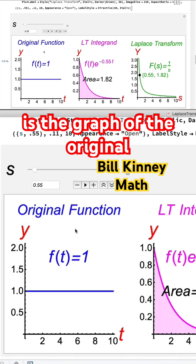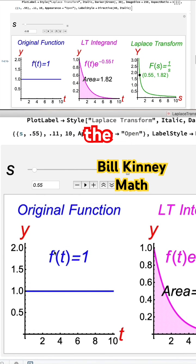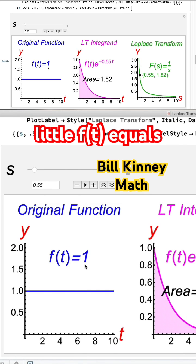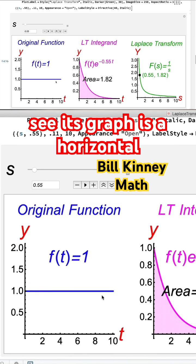The graph on the left is the original function, the constant function f(t) = 1 for all t. You can see its graph is a horizontal line.